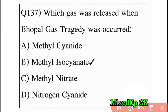Next question: which gas was released during the Bhopal gas tragedy? Option A: methyl cyanide, Option B: methyl isocyanate, Option C: methyl nitrate, Option D: nitrogen cyanide. The answer is Option B: methyl isocyanate.